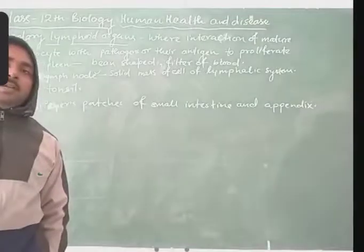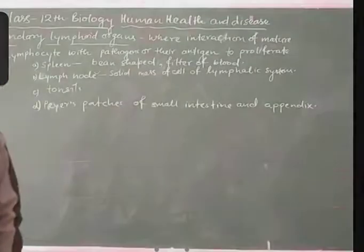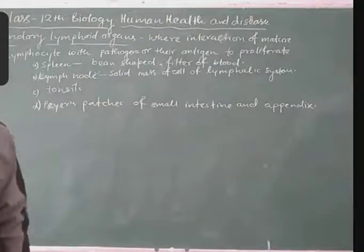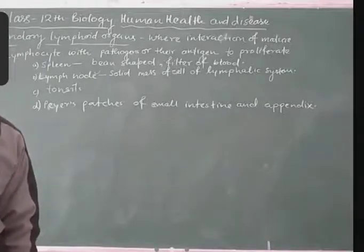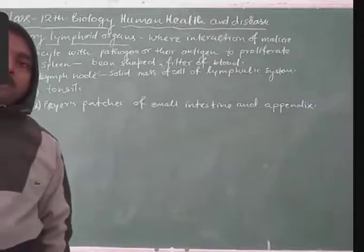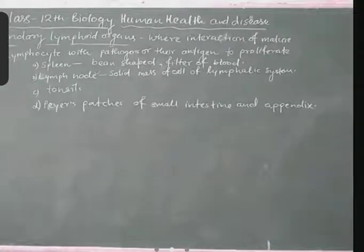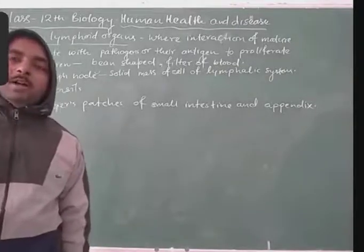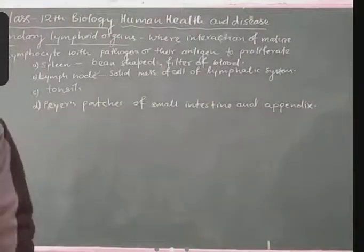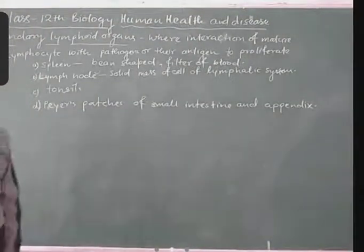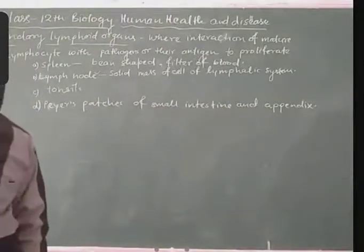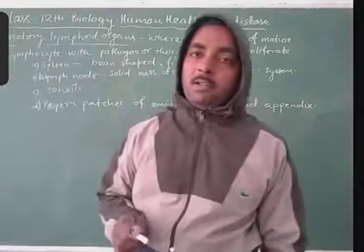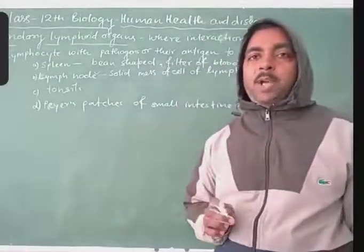The next is tonsil. Tonsil is an organ present in the neck region and is related to the interaction of lymphocytes with pathogens. Enlargement of the tonsil is one of the symptoms of infection. During childhood, the tonsil becomes enlarged due to some respiratory infection, which is a sign that the tonsil is doing its work — the interaction of lymphocytes with the pathogen.